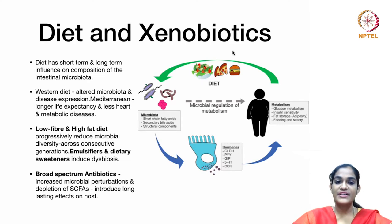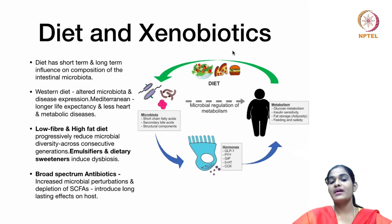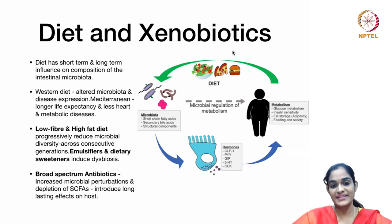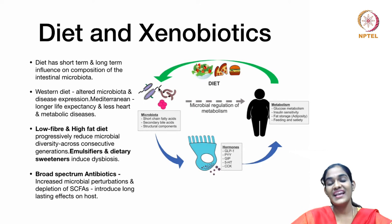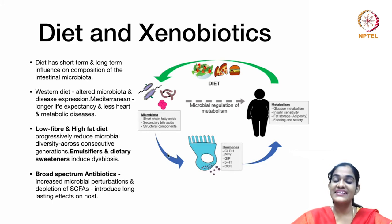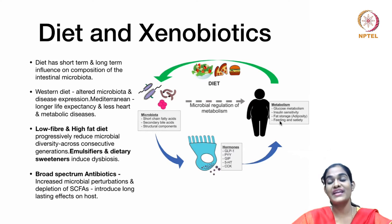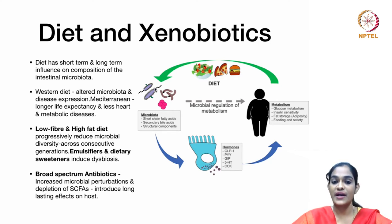Diet has a major impact on dysbiosis, with both short-term and long-term influence on the composition of intestinal microbiota. Evidence shows that the Western diet is more implicated with altered microbiota and disease expression, while the Mediterranean diet is associated with longer life expectancy and less heart and metabolic disease. The microbiota acting on dietary fibers and proteins releases metabolites such as short-chain fatty acids. These, along with secondary bile acids, trigger hormones that help in glucose metabolism, insulin sensitivity, fat storage, and satiety. Derangement of these functions leads to a dysbiotic microbial community.